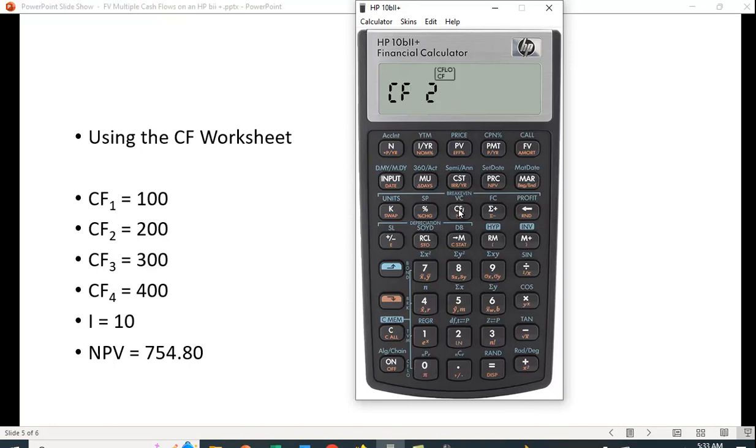$200. I hit this function again, cash flow two. Cash flow three is going to be $300, and cash flow four is going to be $400.